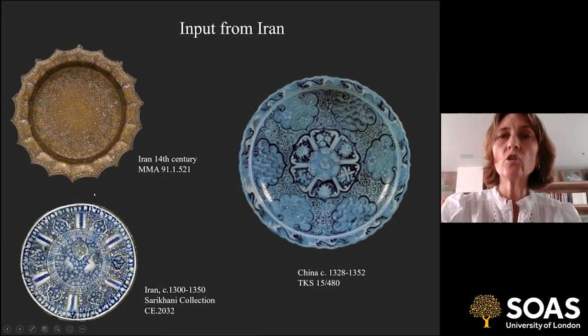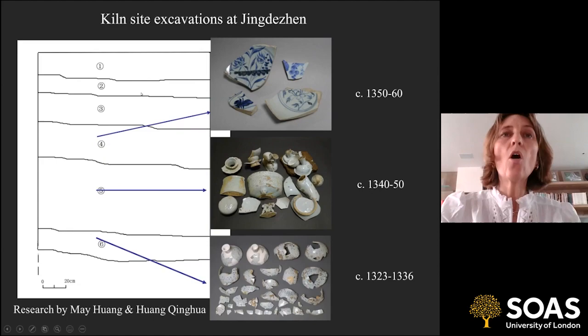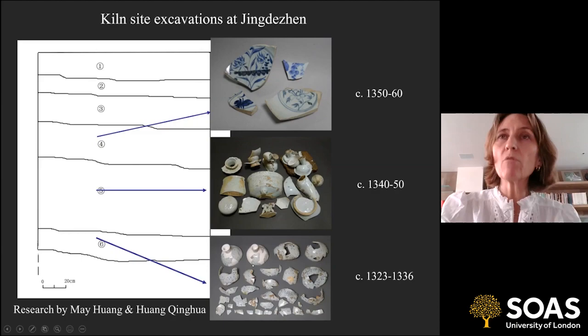It was actually the excavations by Mei Huang and her husband at Jingdezhen — when they discovered a kiln site on the site of an old cinema — that proved decisive. These are graphics of the sherds from different levels of excavation. Right at the bottom they found pieces that, when put back together, were identified as stemmed cups. They established the date of this level as around 1323 to 1336.